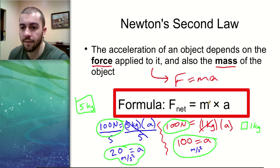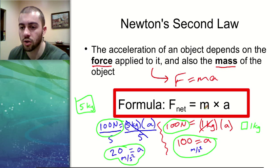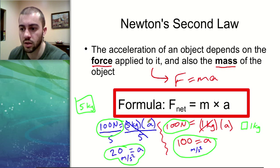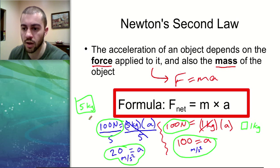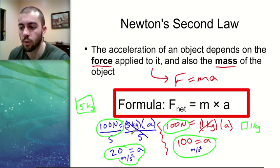The heavier an object is — the higher its mass — the more resistant it's going to be to acceleration, and that's the concept of inertia, which we'll talk about in a separate video. The heavier an object is, basically the harder it is to accelerate. We put the same force into these two, and the five kilogram object did not accelerate as much. If we wanted to get the same acceleration out of the five kilogram object, we'd have to put a lot more force into it.